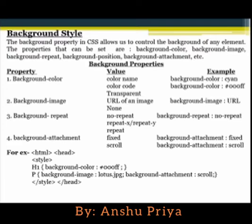Next one is background style. The background property in CSS allows the configuration of the background of any element. By using the background property in CSS you can set the background style. The properties that can be set are background-color, background-image, background-repeat, background-position, and background-attachment.